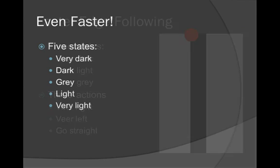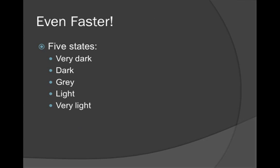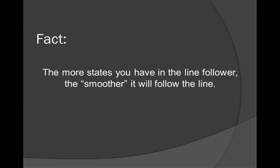We could take this idea and make it even faster. We could have five states of very dark, dark, gray, light, and very light, where we turn very much to the left, only a little to the left, go straight, only a little to the right, or a lot to the right. This leads us to the fact that the more states you have in your line follower, the smoother it will follow the line, which tends to mean it's going to follow the line faster.